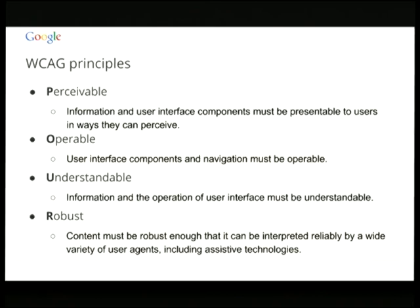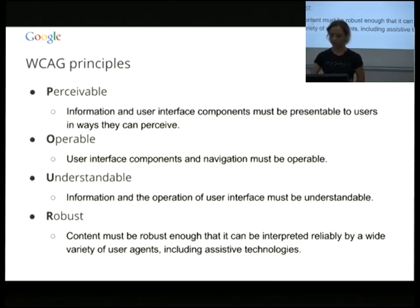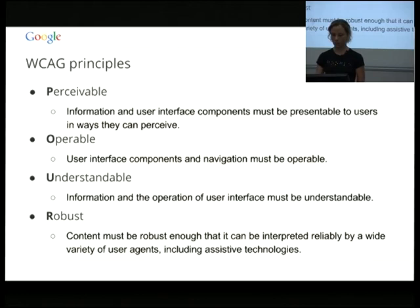Perceivable implies that information and user interface components must be presentable to users in ways they can perceive — in the case of a screen reader, you have to have text alternatives. Operable implies you've thought through things like hover interactions, making sure people who can't use a mouse can still interact with that element. Understandable means things aren't too opaque or completely incomprehensible to a user. And robust — that it's flexible and can be interpreted by a wide variety of user agents and assistive technologies.